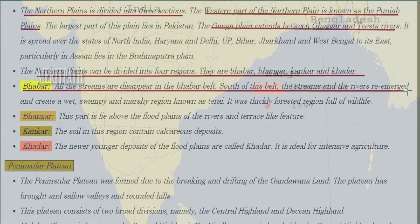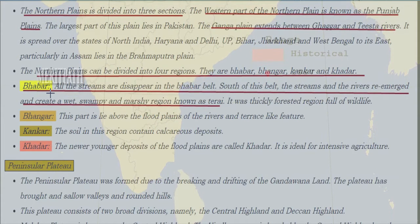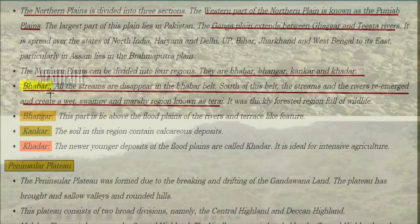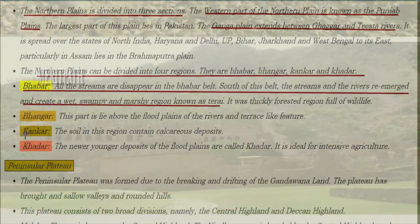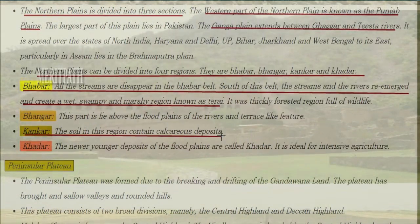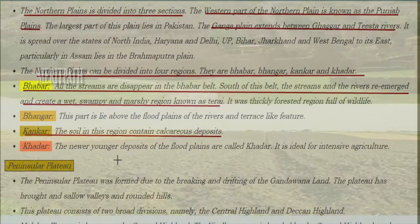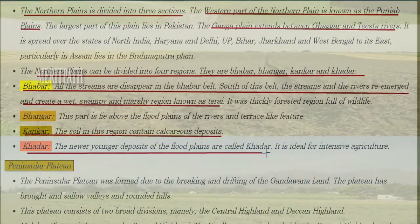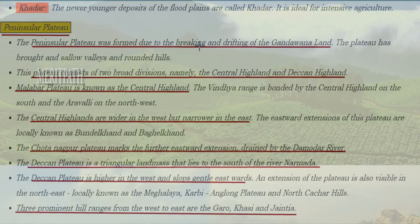The Northern Plains can be spread into four regions: Bhabar, Bhangar, Khadar and Terai. All streams disappear in the Bhabar belt. South of this belt, streams and rivers re-emerge and create a wet, swampy and marshy region known as Terai, which was a thickly forested region full of wildlife. Bhangar lies above the flood plains of the rivers and has terrace-like features.